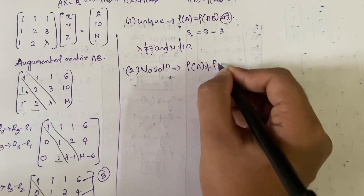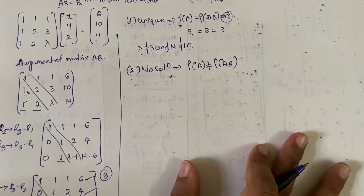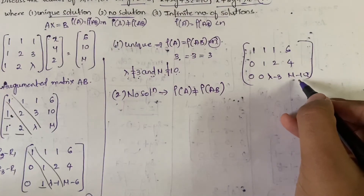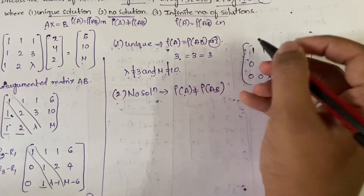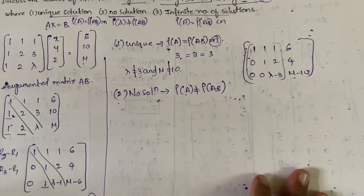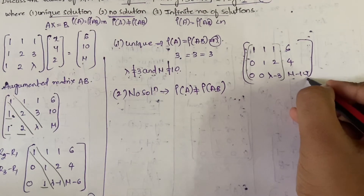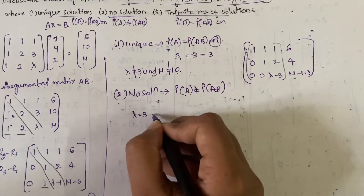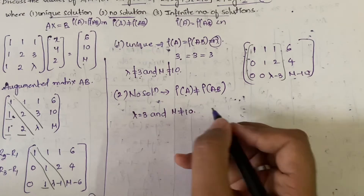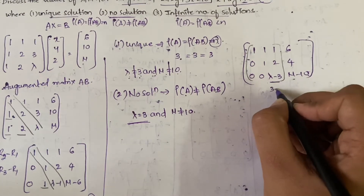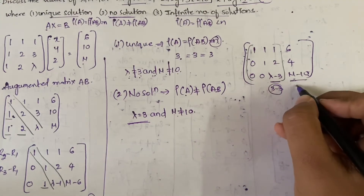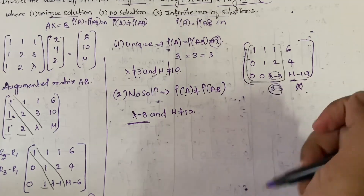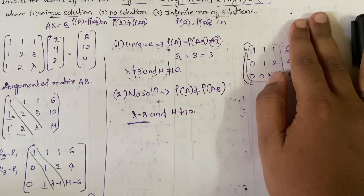For no solution, rank(A) ≠ rank([A|b]). If λ = 3, the element λ−3 becomes 0. If μ ≠ 10, then μ−10 is never 0. So if λ = 3, the entire third row of matrix A becomes a zero row, but the augmented row [0 0 0 | μ−10] still has a non-zero last element.